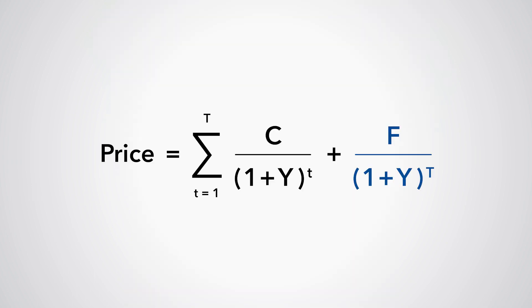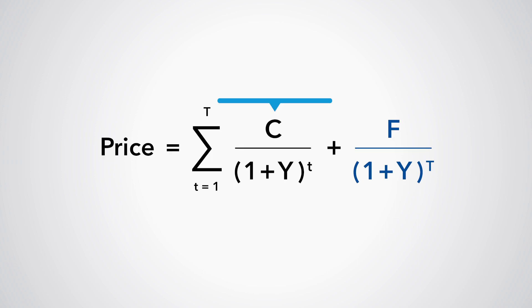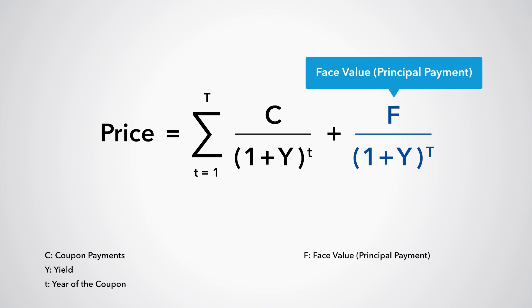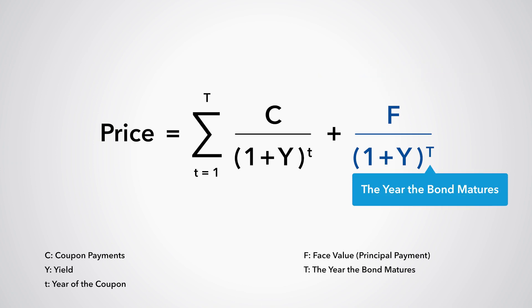In this equation, the price on a bond is the sum of each of the coupon payments, C, divided by 1 plus the yield, Y, to the power of t, which is the year of the coupon. To this we add the principal payment of the bond, F, again divided by 1 plus the yield, to the power of capital T, which represents the year the bond matures. We need to solve this equation for Y.